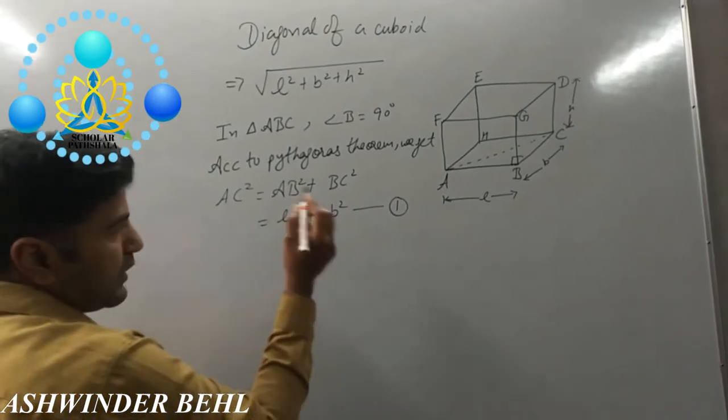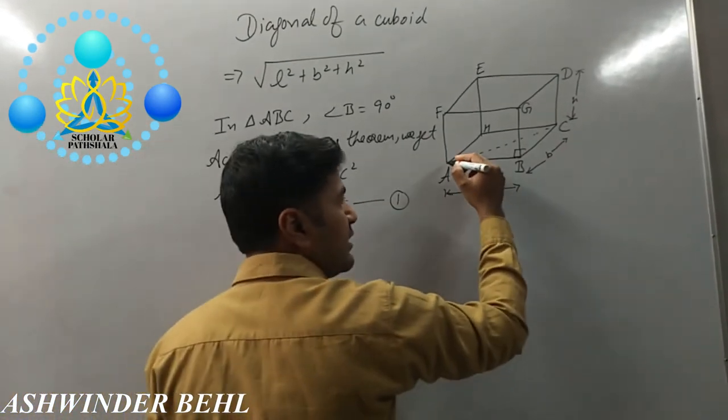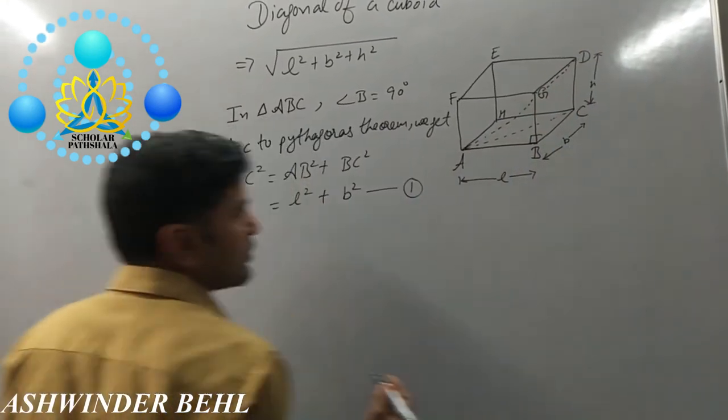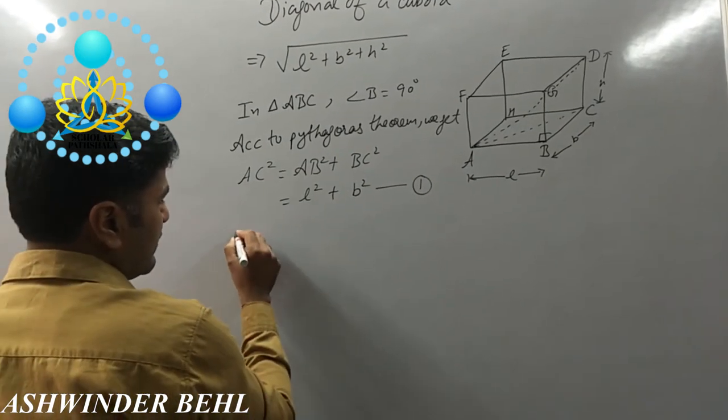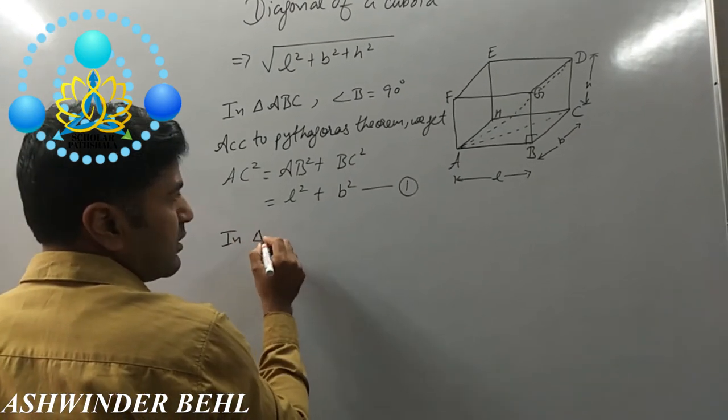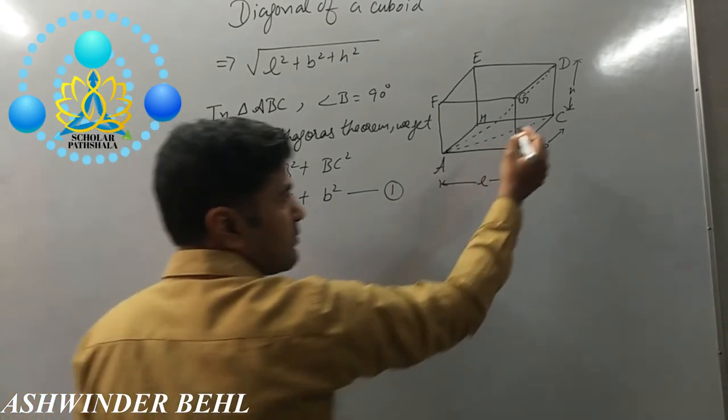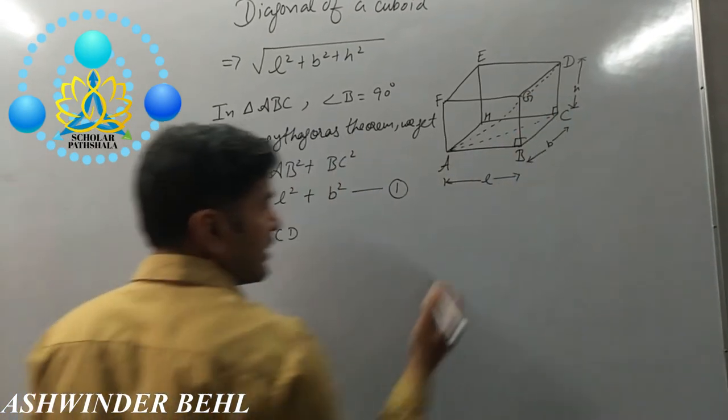Now if we join A and D, in triangle ACD, angle C is 90 degrees.